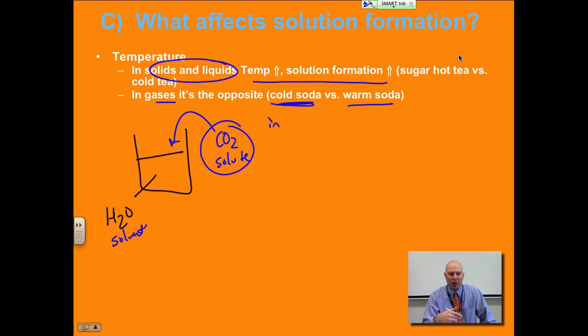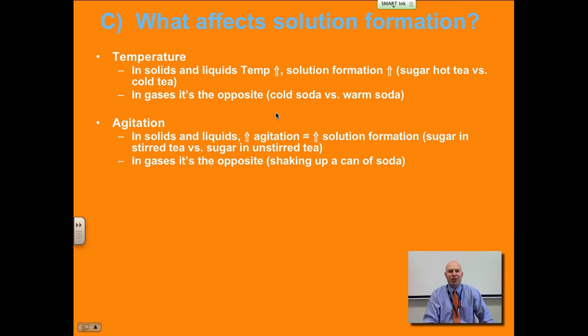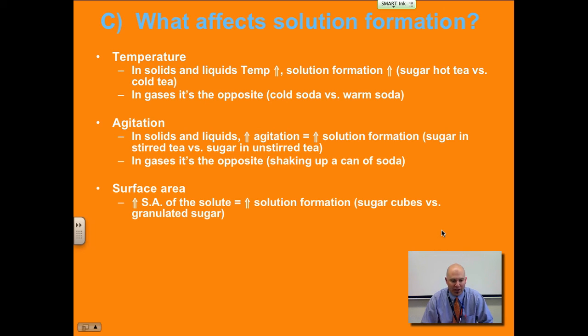So that's temperature. The next is agitation—stirring or shaking. In solids and liquids, you increase the agitation, you increase the solution formation. Sugar and stirred tea versus sugar and unstirred tea. If you have your tea and you pour your sugar into your solvent, stir it up, it's going to dissolve it quicker. Why? That's because the molecules are banging up against those solute crystals more and more often. It breaks them down. In gases, again, it's the opposite. You shake up a can of soda, the bubbles will come out.